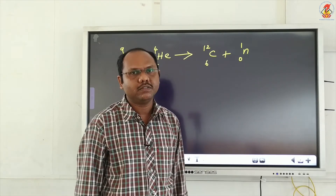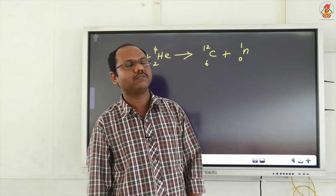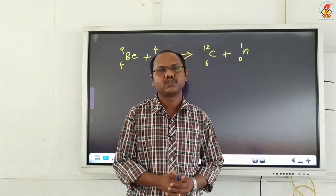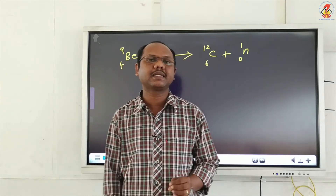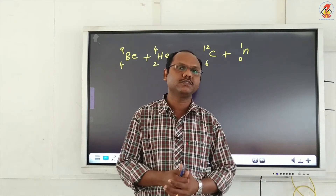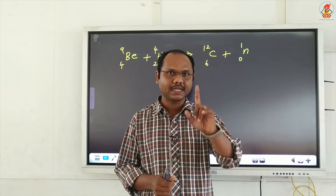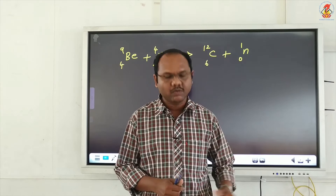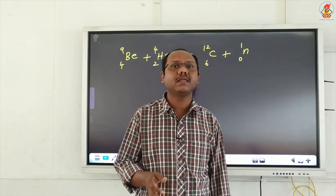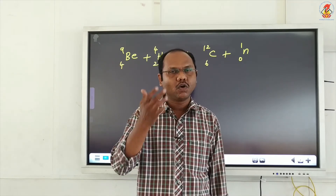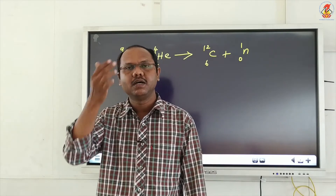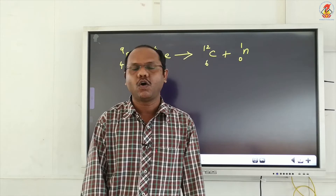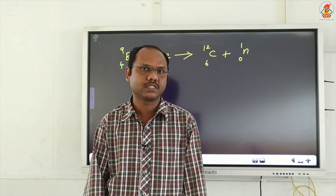Neutron has many properties. First, neutron has no charge, so it is not deflected by electric and magnetic fields. We cannot deflect neutrons with electric and magnetic fields — that is the first property. Neutron is present in all elements except hydrogen. Only hydrogen does not have neutrons. All the other elements have neutrons in their nucleus.